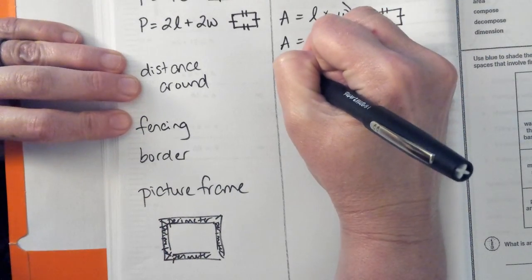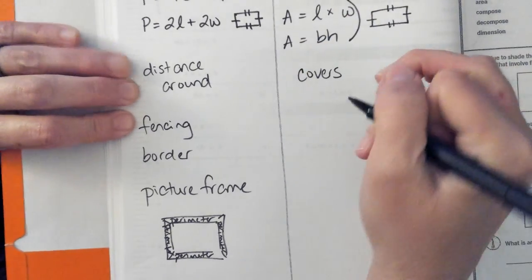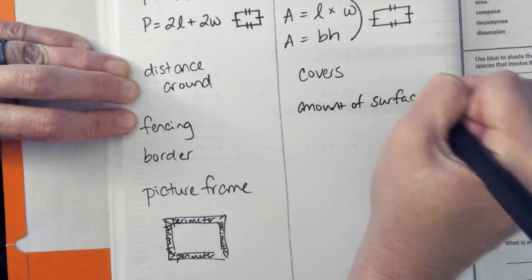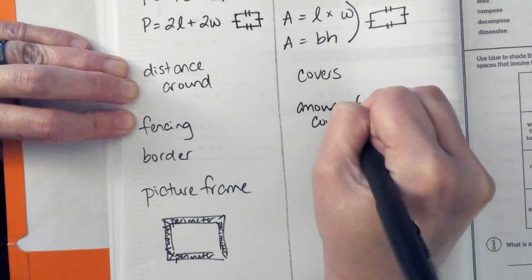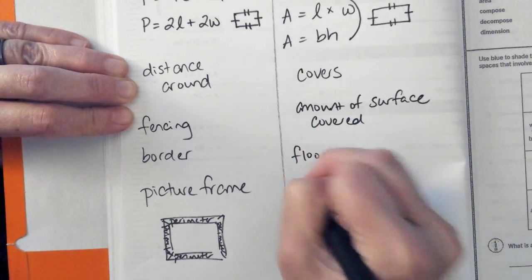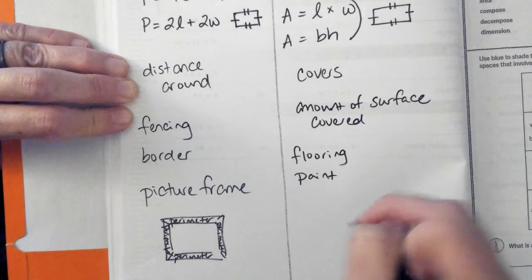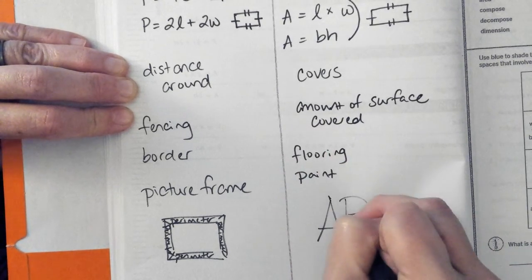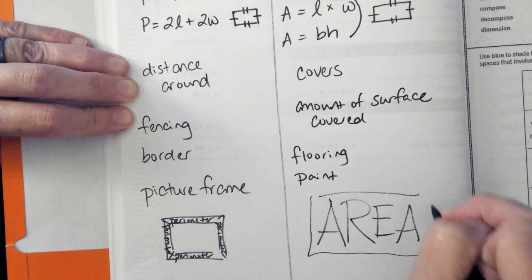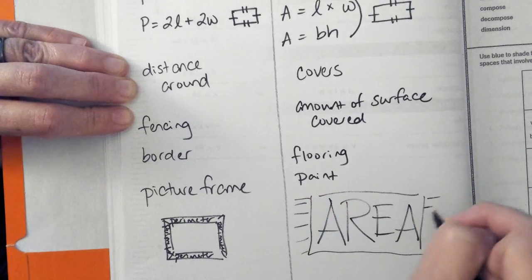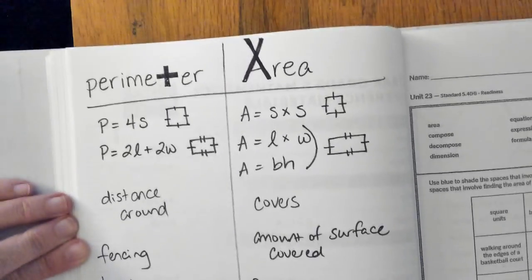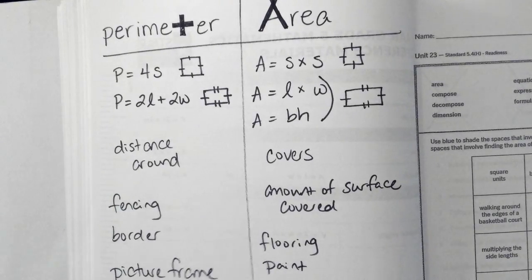Area is covers. It's the amount of surface covered. It's good for thinking about flooring or paint, and I can also think of area like an area rug. So those are just some different things to think about with perimeter and area.